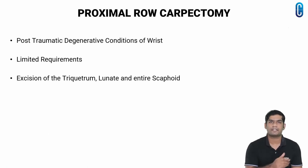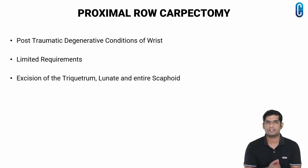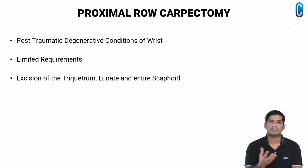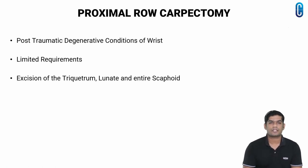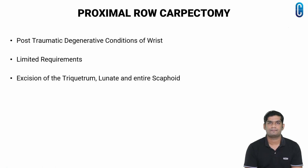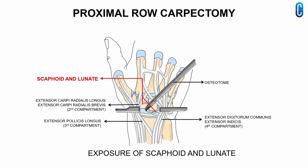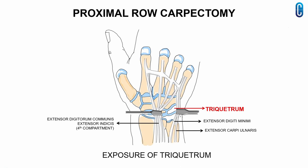Proximal row carpectomy is used as a reconstructive procedure for post-traumatic degenerative conditions of the wrist. It is considered satisfactory in patients who have limited requirements, desire some wrist mobility, and accept the possibility of minimal persistent pain. Excision of the triquetrum, lunate, and entire scaphoid is usually recommended, though the distal pole of the scaphoid at its articulation with the trapezium can be left to provide a more stable base for the thumb. The procedure is performed through a dorsal approach, with exposure of the scaphoid and lunate between the 2nd and 4th dorsal compartments.